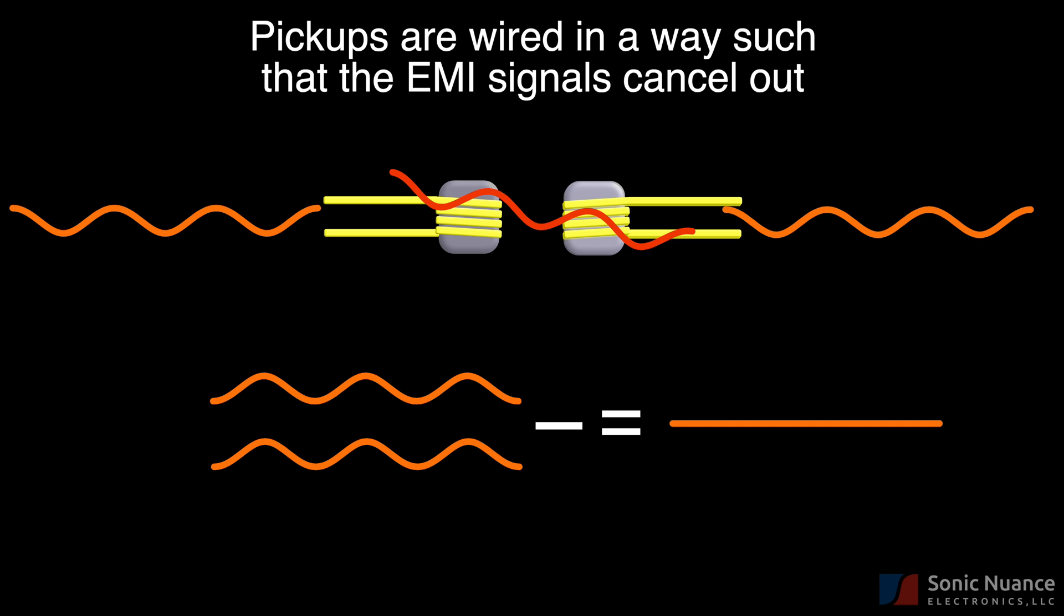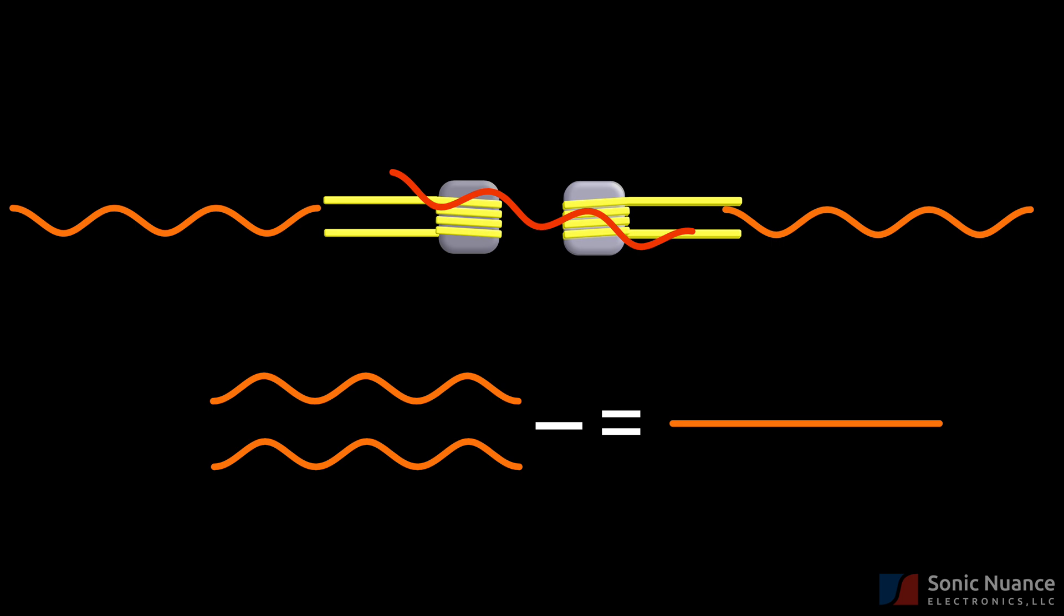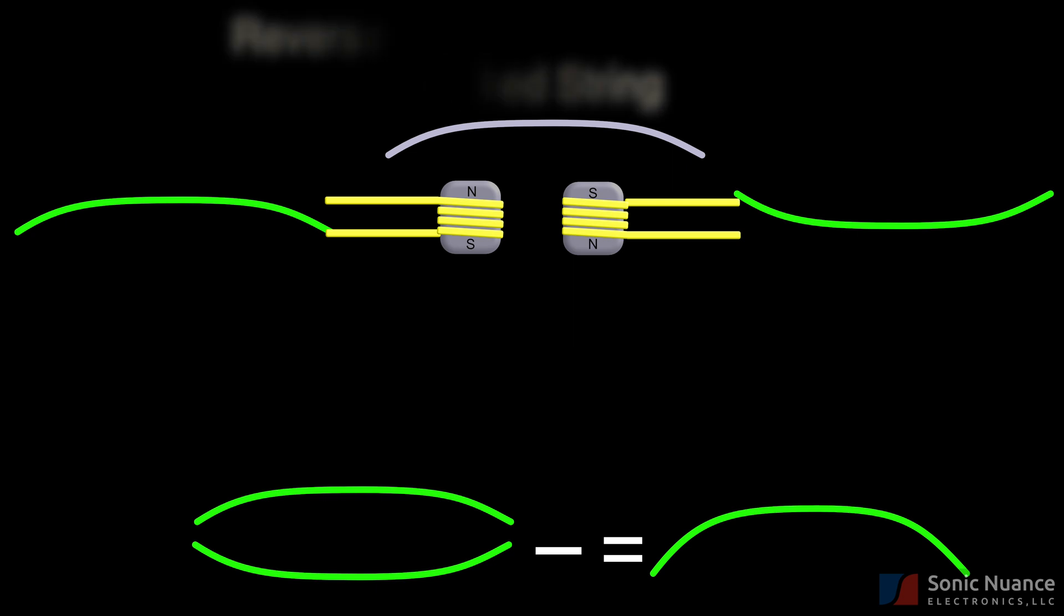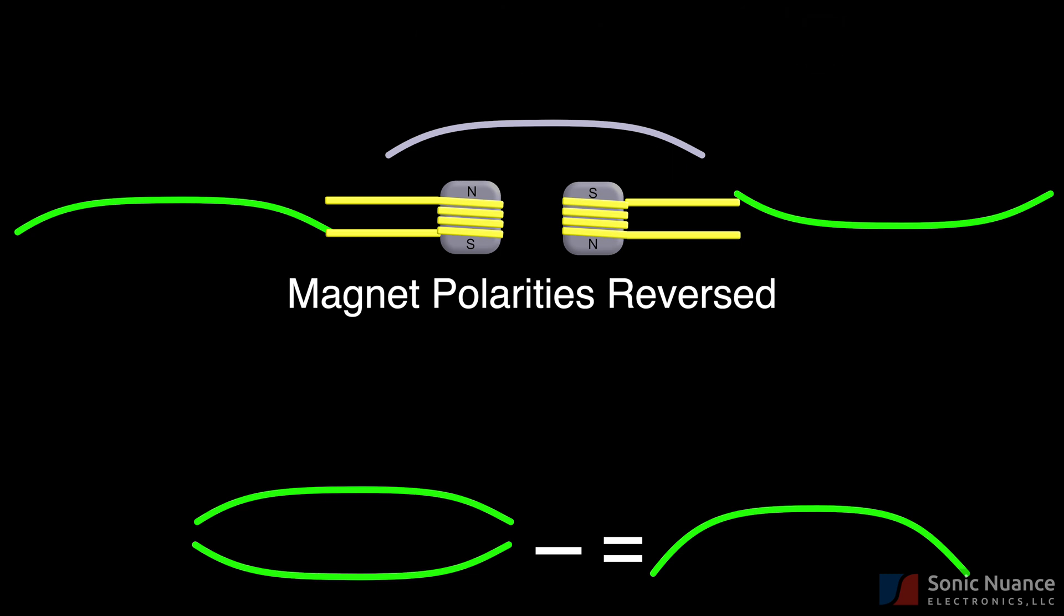To prevent the desired string signal from being subtracted as well, one of the pickups is wound in an opposite direction and has a magnet oriented with opposite polarity. This is often referred to as reverse wound reverse polarity. This is shown on the diagram with the pickup on the left having an opposite winding direction from the pickup on the right. Note that the pickup on the right has a south-north orientation, whereas the pickup on the left has a north-south orientation.